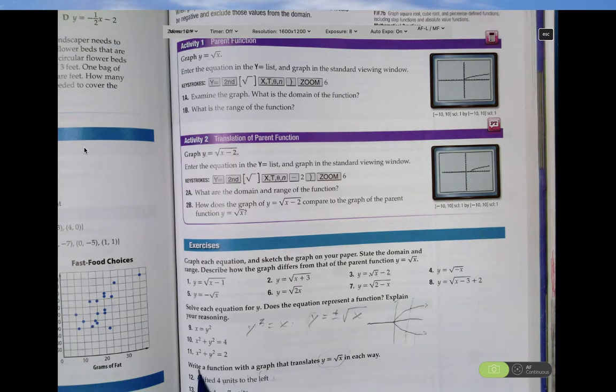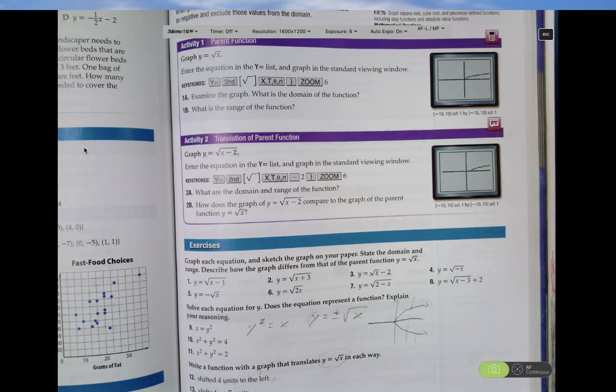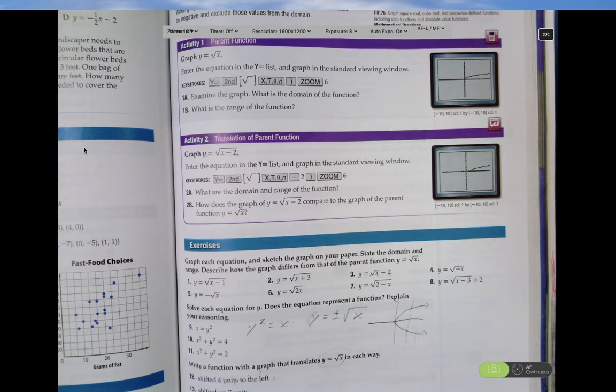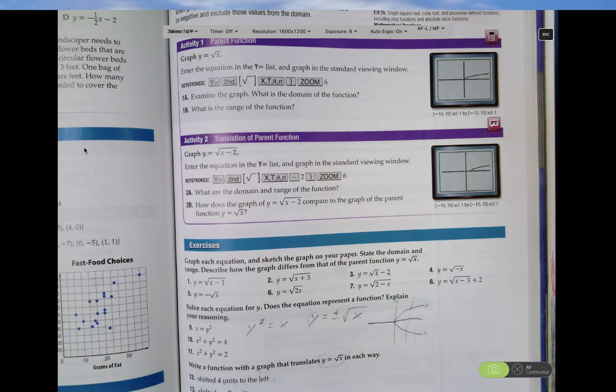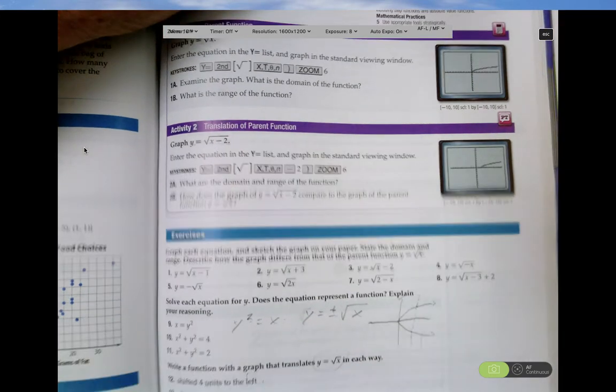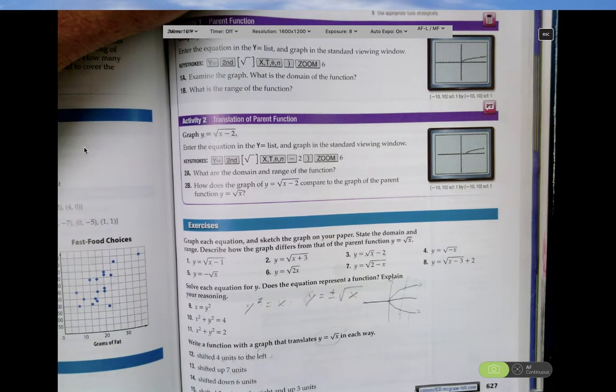And then the last part is I write a function with the graph that translates the parent function. For example, this one, it shifted four units to the left would be, anyhow, you put that into the radicand. y equals the square root of x. And then you decide what to do, plus or minus the four units you decide. This would be a vertical shift. You don't see it, but yeah.